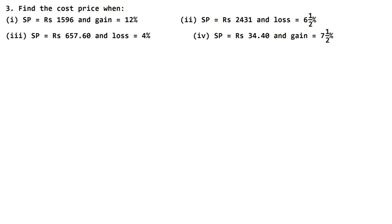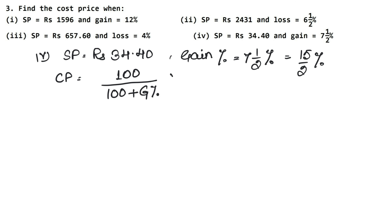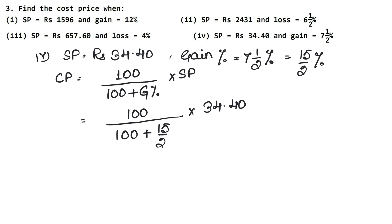Let's do the last part now. Last part: selling price is Rs. 34.40 and gain percent is 7 and 1/2 percent. So first let's convert this mixed fraction: 2 sevens are 14, plus 1 is 15 — so gain percent becomes 15/2 percent. Now we need to find CP. The formula when gain percentage is given is: CP = 100 upon (100 plus gain percent) into SP. So: 100 upon (100 plus 15/2) into 34.40.